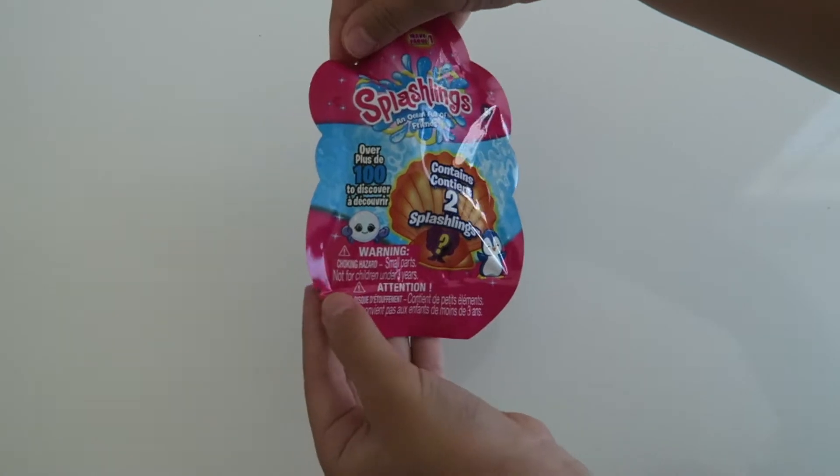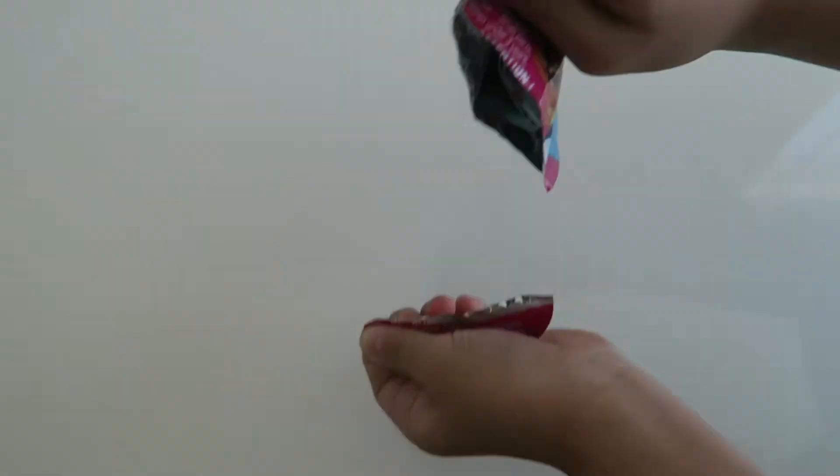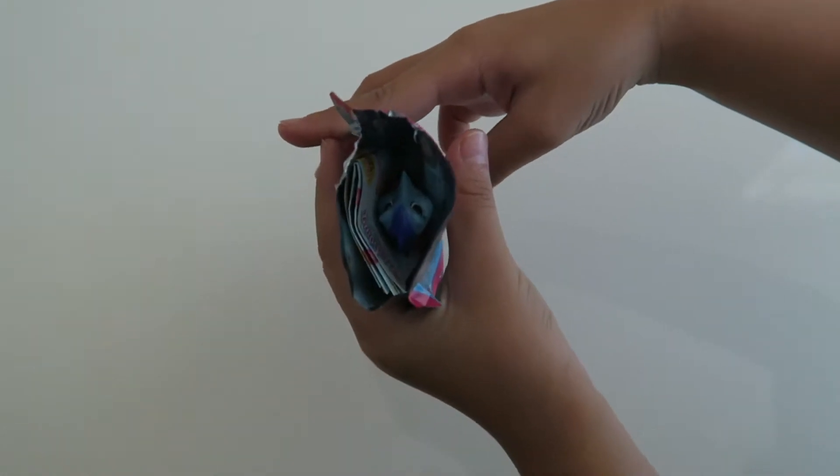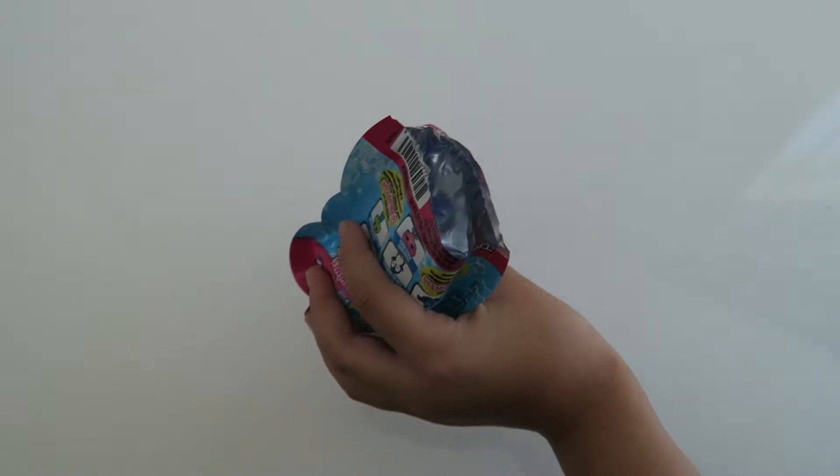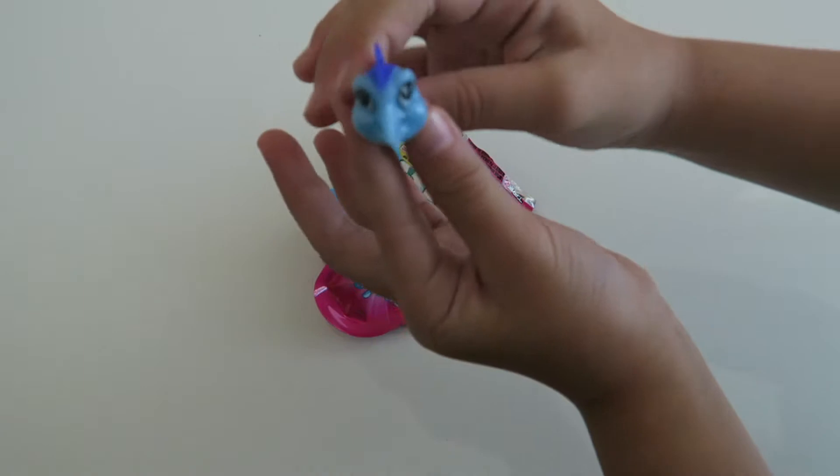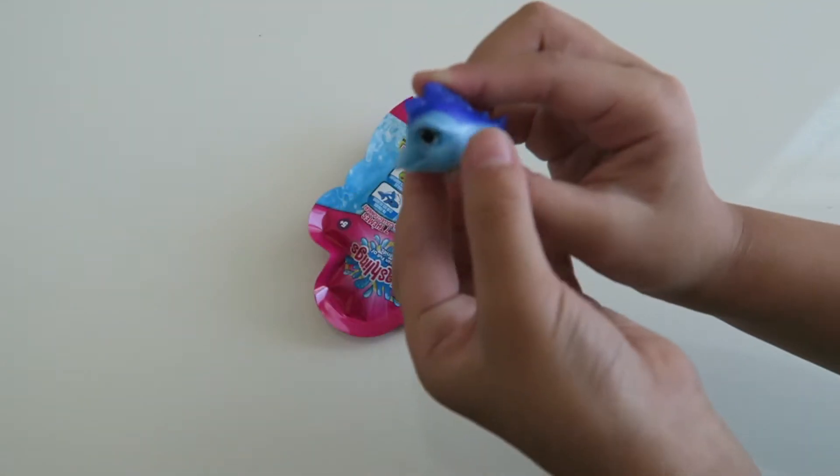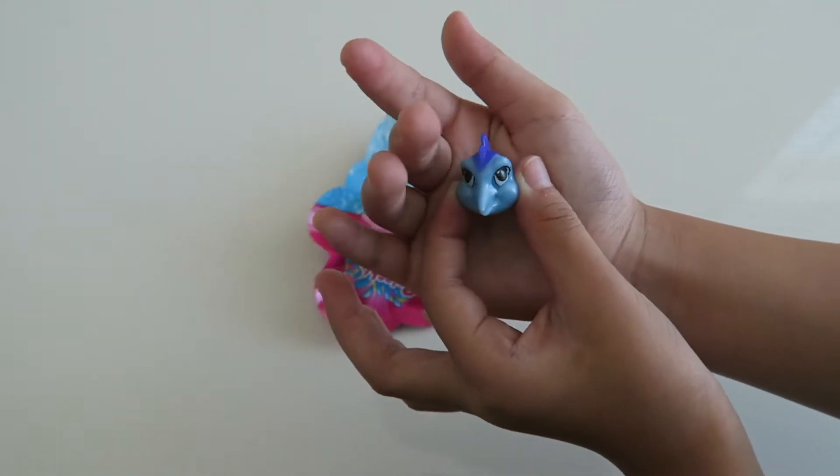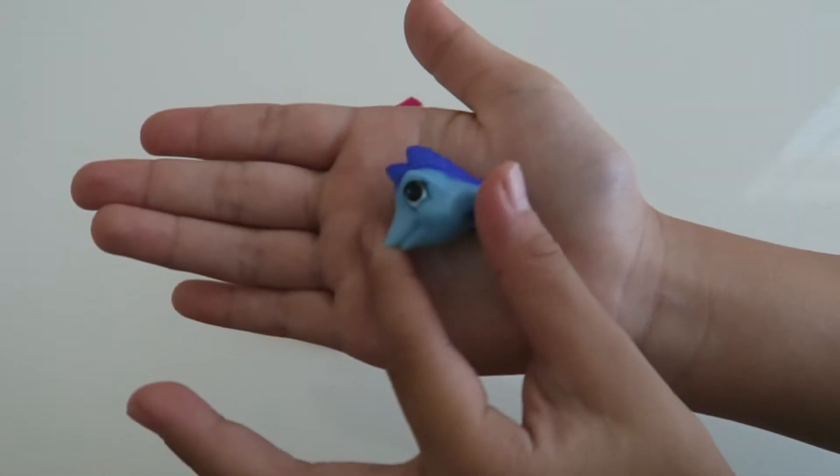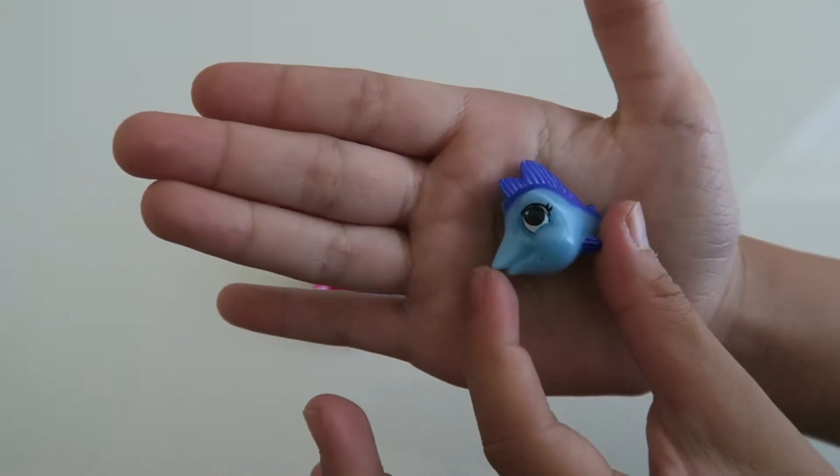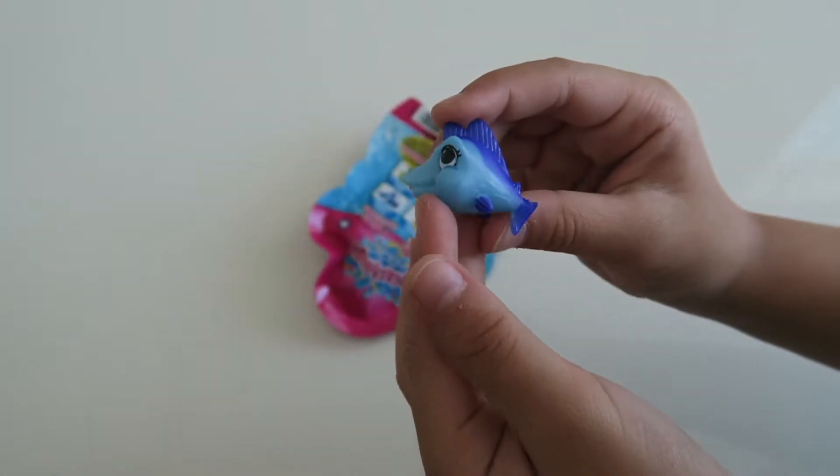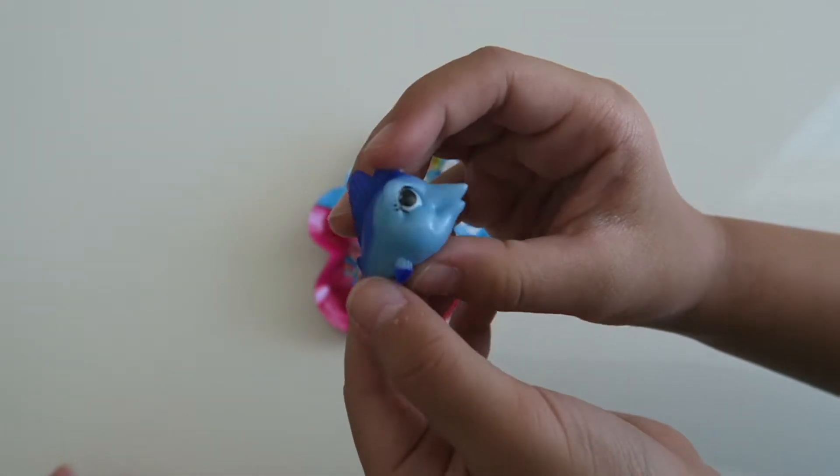So let's open it and see who we get. Oh my goodness. Take out the checklist. So the first one is like another pearly one. It's like a big fish. His name is Mike the Nose. And that one is a rare. I'm so excited. He is also from the Finn's Friends section. He's so funny looking.